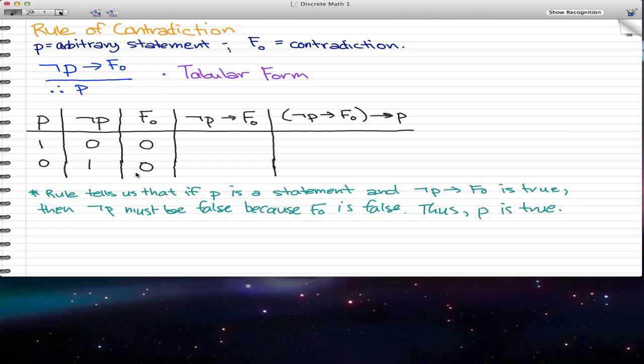Now, FO is always zero because it's false, and zero pretty much represents false at any time. So, we have negated P implies FO. That will give us one zero, and this statement, when this statement infers P, that will give us one one. Because one, one implies one is one, zero implies zero is one.